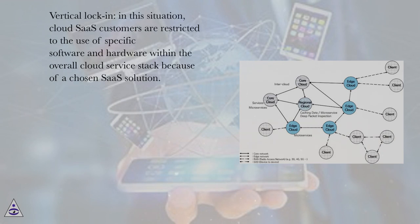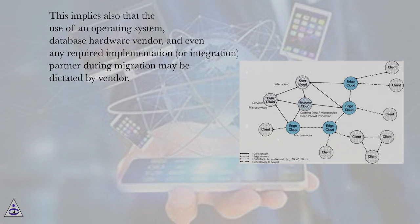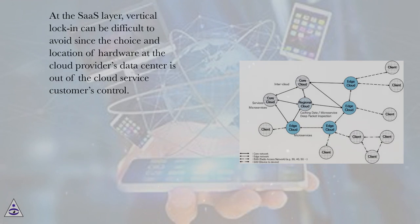Vertical lock-in: in this situation, cloud SaaS customers are restricted to the use of specific software and hardware within the overall cloud service stack because of a chosen SaaS solution. This implies also that the use of an operating system, database hardware vendor, and even any required implementation or integration partner during migration may be dictated by the vendor. At the SaaS layer, vertical lock-in can be difficult to avoid since the choice and location of hardware at the cloud provider's data center is out of the cloud service customer's control.